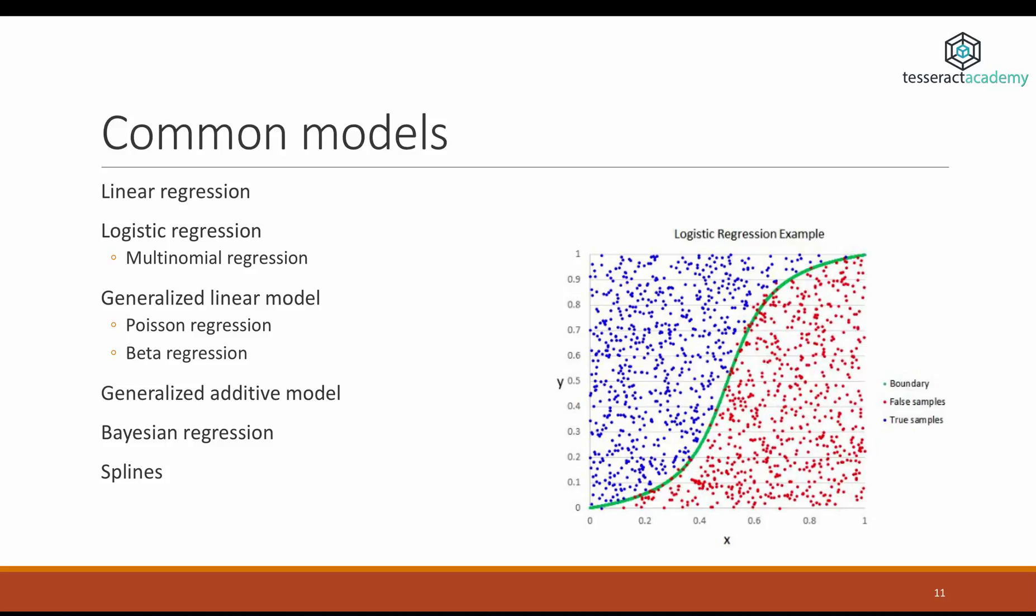Beta regression is another model that's very useful when our variable is bounded on the interval between 0 and 1. We have more flexible modeling choices with models such as generalized additive models that can model nonlinear relationships, Bayesian regression, which lets us incorporate prior knowledge, or splines - another nonlinear model.